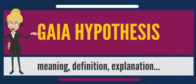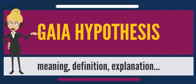The Gaia hypothesis, also known as Gaia theory or Gaia principle, proposes that organisms interact with their inorganic surroundings on earth to form a synergistic self-regulating, complex system that helps to maintain and perpetuate the conditions for life on the planet. Topics of interest include how the biosphere and the evolution of life forms affect the stability of global temperature, ocean salinity, oxygen in the atmosphere, the maintenance of a hydrosphere of liquid water and other environmental variables that affect the habitability of earth.